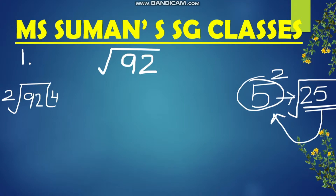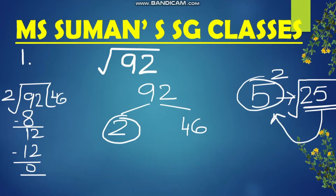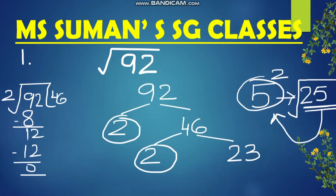So 2 times 4 is 8 and 2 times 6 is 12, so for 92 we have two factors: 2 and 46. Since 2 is a prime number, I'm going to circle it. Now for 46, we get 2 and 23. 2 is a prime number, so I'll circle it. 23 is also a prime number, so I'm going to circle 23 as well.